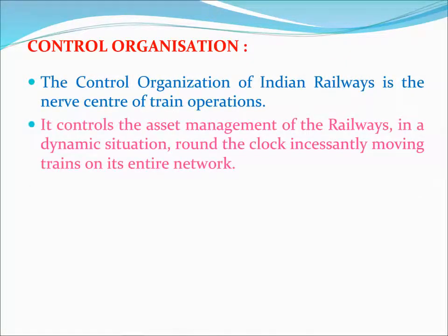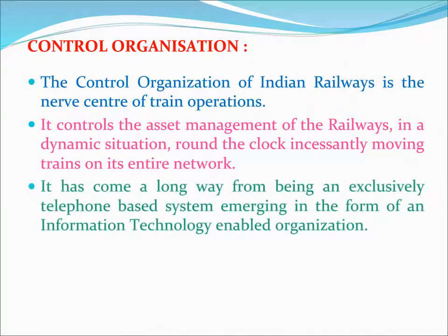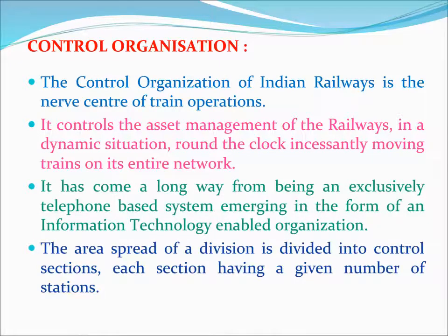The control organization of Indian Railways is the nerve center of train operations. It controls the asset management of railways in a dynamic situation, round-the-clock, incessantly moving trains on its entire network. It has come a long way from being an exclusively telephone-based system, emerging in the form of an information technology-enabled organization. The area spread of a division is divided into control sections, each section having a given number of stations.